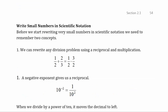Now writing small numbers in scientific notation. We need to remember two concepts: first, any division problem can be rewritten using a reciprocal and multiplication — for example, one-half divided by two-thirds becomes one-half times three-halves. Second, a negative exponent gives a reciprocal — so 10 to the negative second power means 1 over 10 squared.